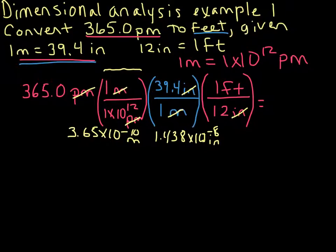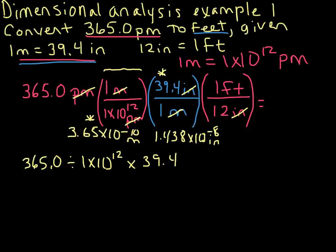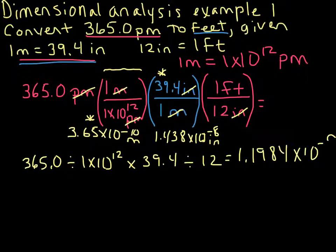All right, so now we want to do the math here. I'm going to write it out in gory detail just so that everybody knows what's going on. Now that we have our dimensional analysis set up, we want to multiply by anything on the top of a fraction and divide by anything on bottom. So let's go ahead and do that. So 365.0 divided by 1 times 10 to 12, then we're going to multiply it by 39.4 and finally divide by 12. That's going to give us our answer. If we plug that into the calculator, we're going to end up with 1.1984 times 10 to the negative 9 feet.